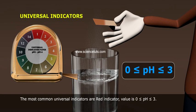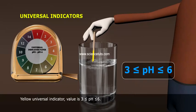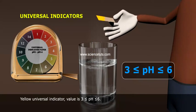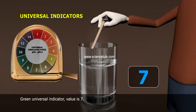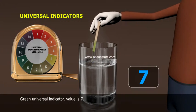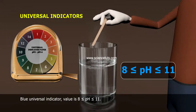Red universal indicator value is 0 ≤ pH ≤ 3. Yellow universal indicator value is 3 ≤ pH ≤ 6. Green universal indicator value is 7.